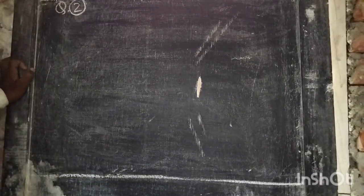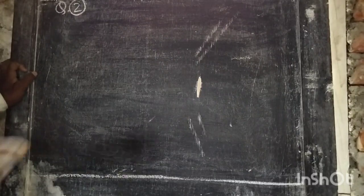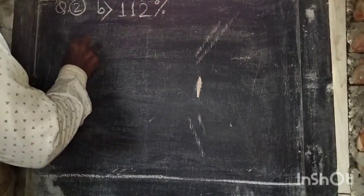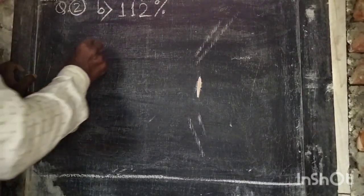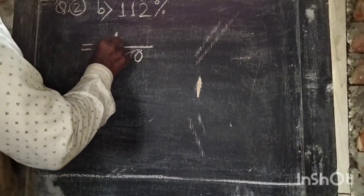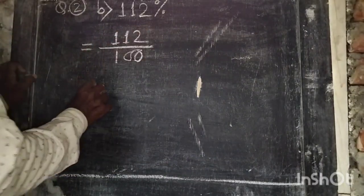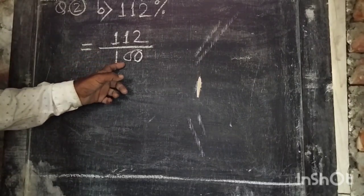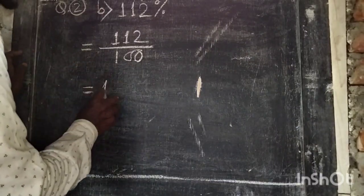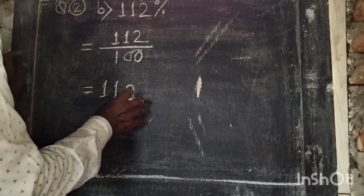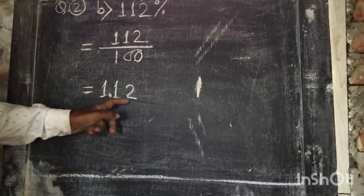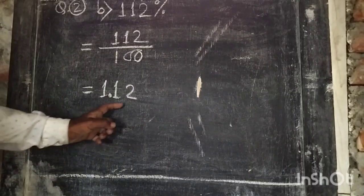Question 2: Convert the following percentages to decimals. Part B: 112 percent — the denominator is 100 with 2 zeros. In the numerator 112, we move the decimal point 2 digits from the right, giving 1.12 as the decimal.